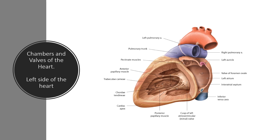The left atrium receives oxygenated blood from the lungs via the right and left pulmonary veins. Blood passes through the bicuspid valve into the left ventricle. The left ventricle needs to be able to pump blood throughout the entire systemic circuit and therefore has the thickest wall. The bicuspid, or atrioventricular, valve has chordae tendineae connecting to the two cusps and two papillary muscles. This ventricle is six to seven times more powerful than the right ventricle.